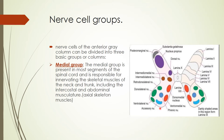The medial group consists of two nerve cell collections: the ventromedial nucleus and the dorsomedial nucleus. This group is present throughout the entire extent of the spinal cord and is responsible for innervating the skeletal muscles of the neck and trunk, including the intercostal muscles, abdominal musculature, and muscles of the neck — that is, the axial skeletal muscles. The medial group is responsible for supplying muscles related to the axial skeleton.